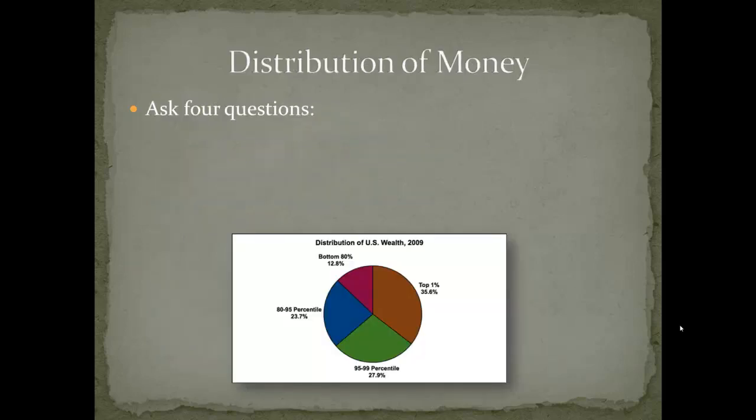So let's begin with the distribution of money. There are four questions that we tend to ask. The first question is, where is the money geographically based? If it's the money of the United States, wouldn't it be based in the United States? It actually turns out there is more money outside of the United States than inside. In Beijing, for example, you can actually purchase in many shops items in the US dollar, even though it's not a legal tender. The geographical basis of the money gives you an idea of the overall influence that country has, globally speaking.